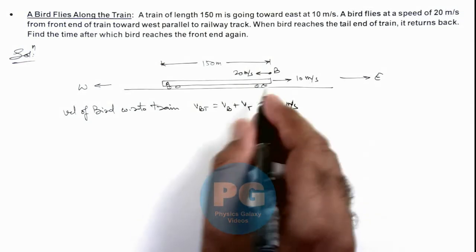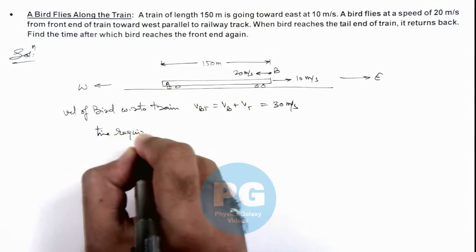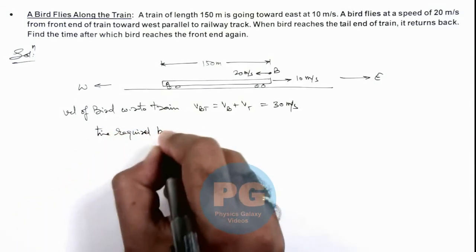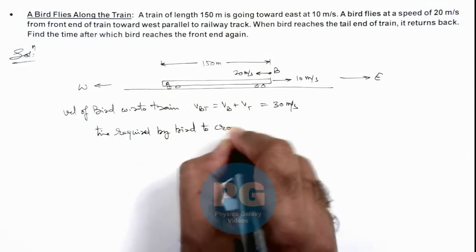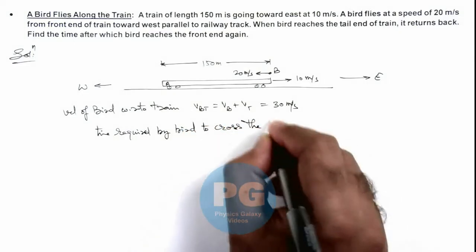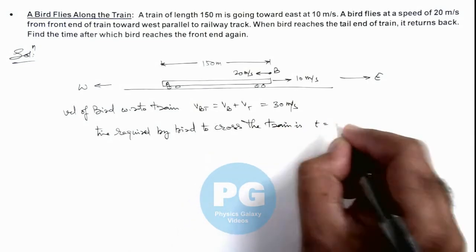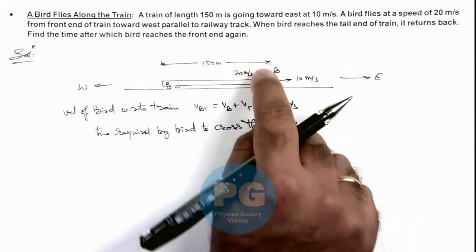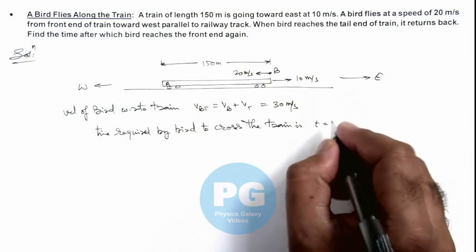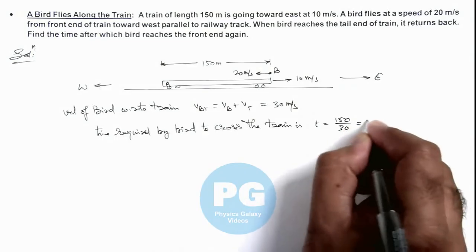So here we can directly calculate the time required by the bird to cross the train. The time required we can write as: this is traveling 150 meters at a speed of 30 meters per second with respect to the train, so it is 150 by 30, that is equal to 5 seconds.